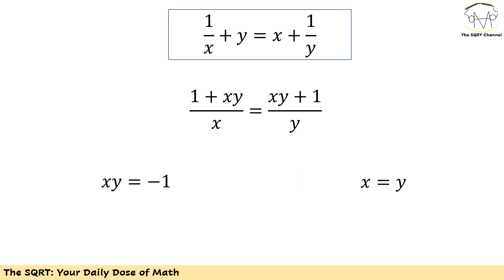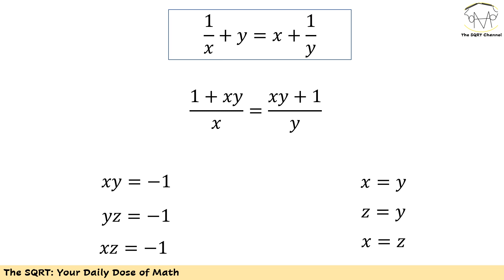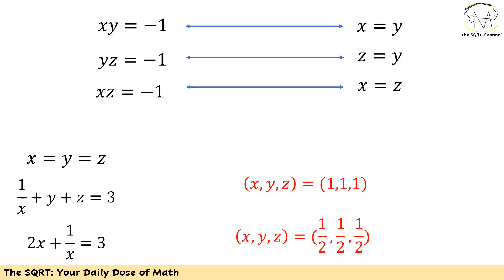For each one we are going to take different paths. You can verify that we have other options too. If you take the other pairs of equations, you end up with either yz equals negative 1 or z equals y, and similarly there is a chance that xz equals negative 1 or x equals z.